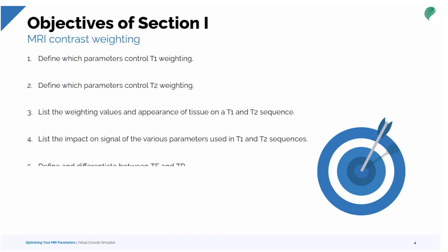In this first section, we'll look at which parameters control T1 weighting, which parameters control T2 weighting, and list the weighting values and appearances of tissue on T1 and T2. The impact on signal on both T1 and T2 will differ in contrast parameters TE and TR. We'll also look at SNR, our signal-to-noise ratio.